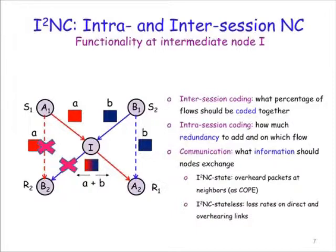Finally, in order to take informed decisions about the inter- and intra-session coding, node I needs to communicate with its neighbors and get feedback from them. We developed two schemes. The first, which we call I2NC-state, is similar to COPE in that it requires information from the neighbors about which packets are overheard there. The second scheme, which we call I2NC-stateless, operates with much less information — node I needs only to know the loss rates on the direct and overhearing links.